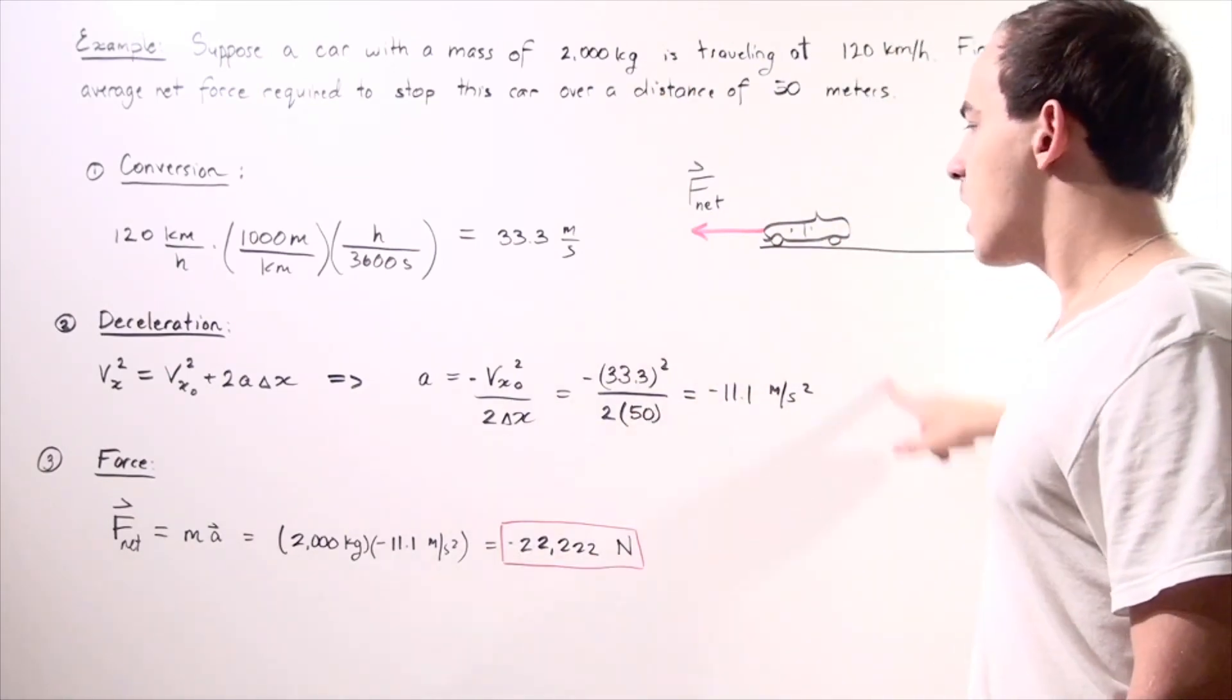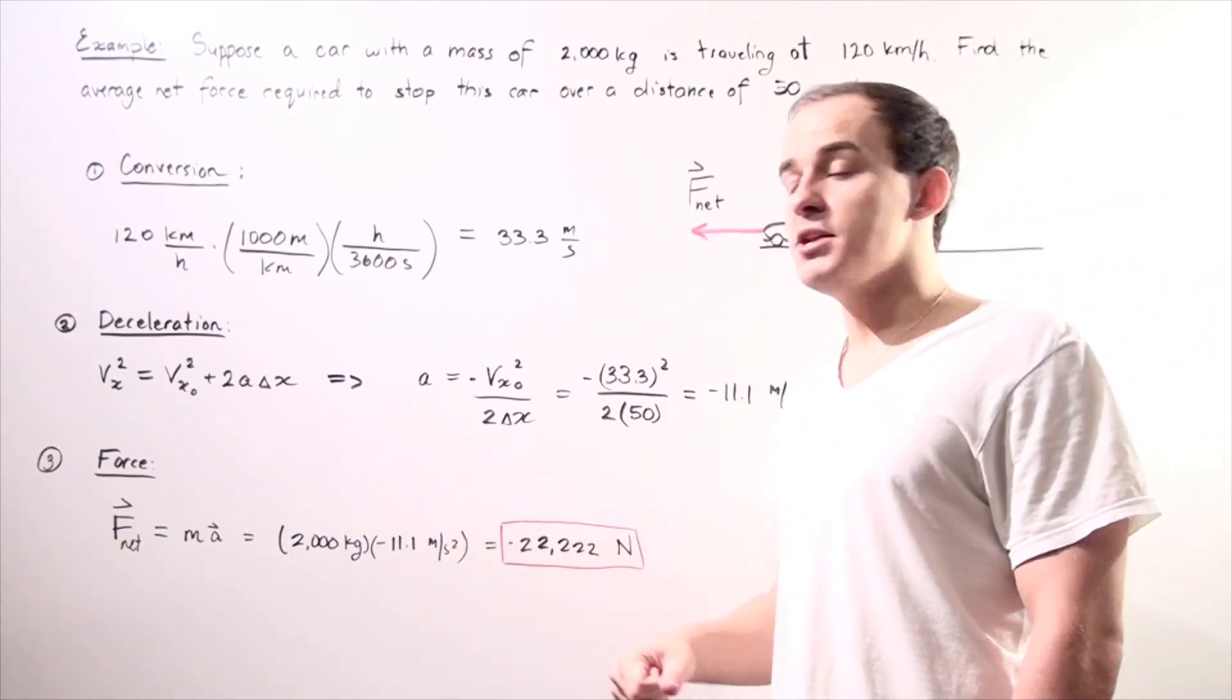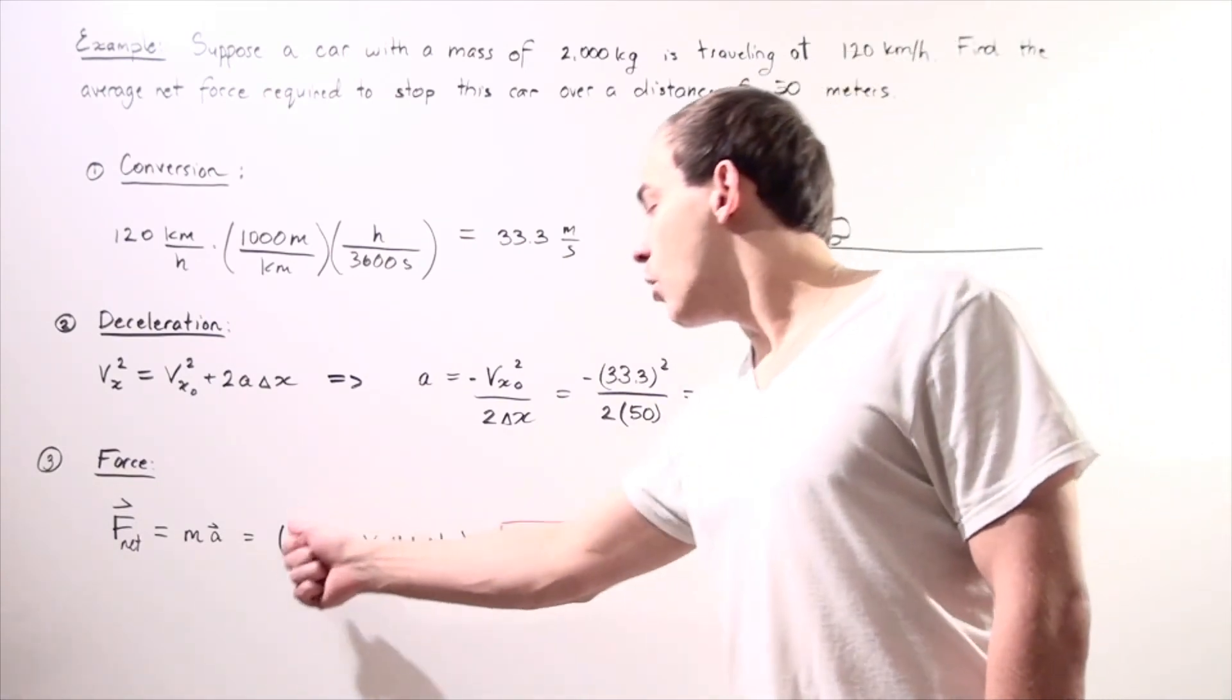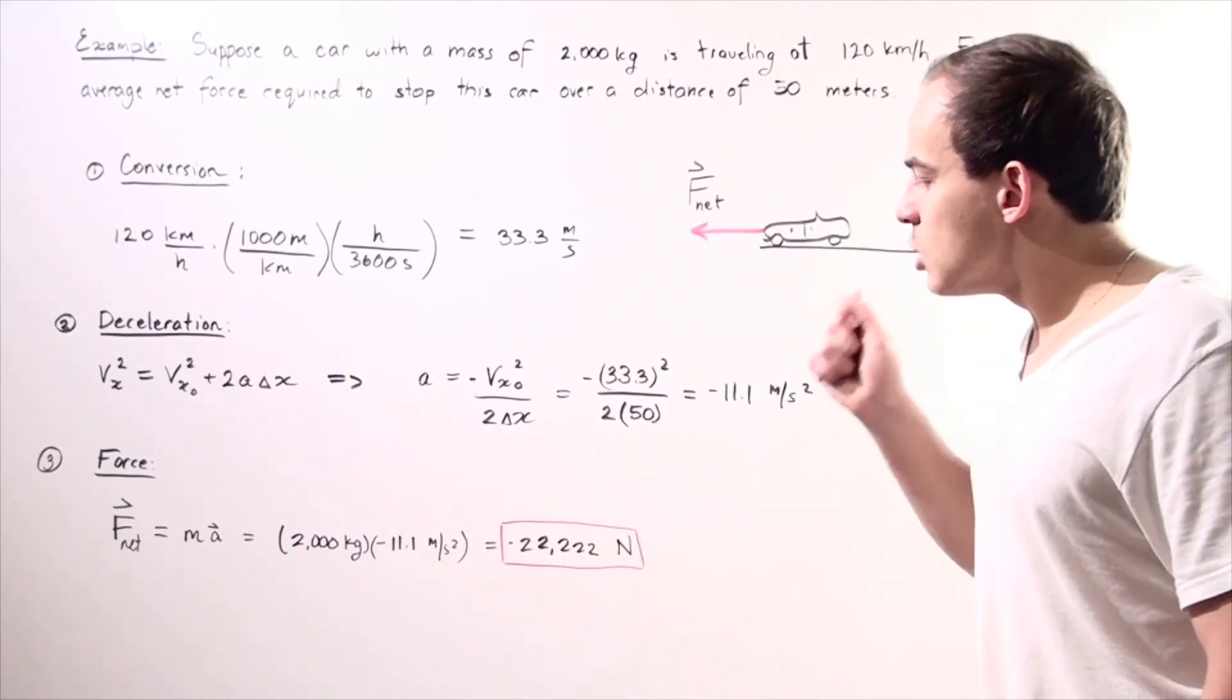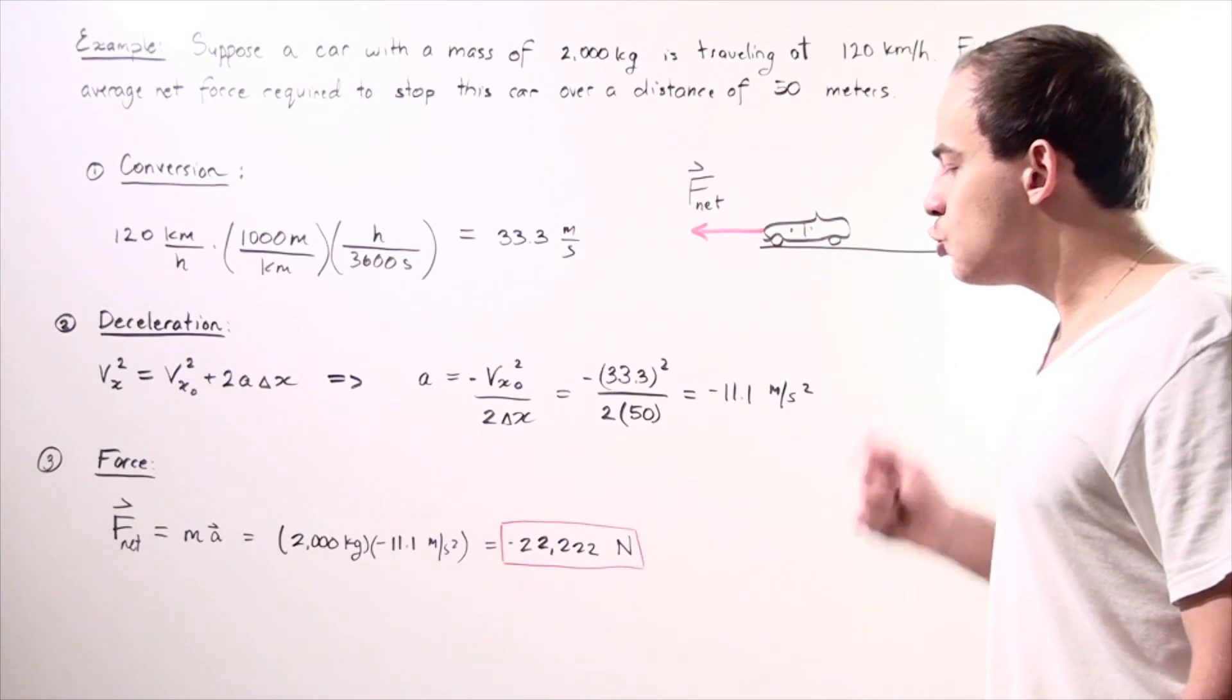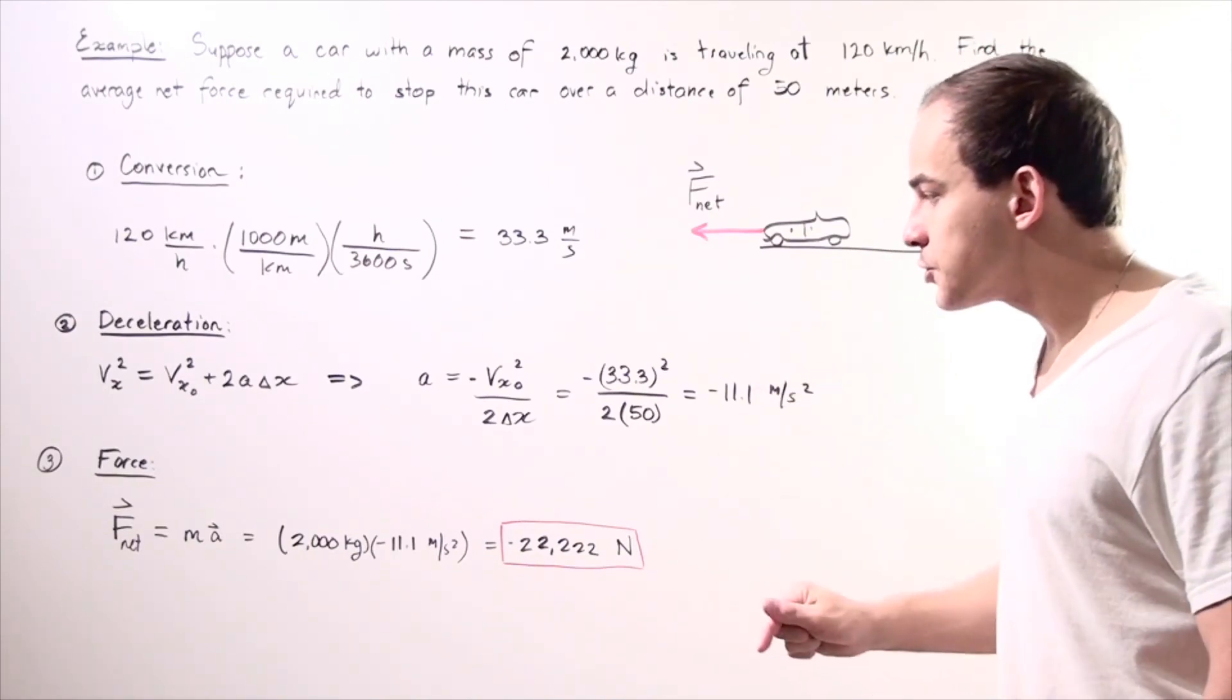And we found our acceleration or deceleration to be 11.1 meters per second squared. So we multiply the two numbers out, and we get approximately 22,222 newtons in the negative direction.